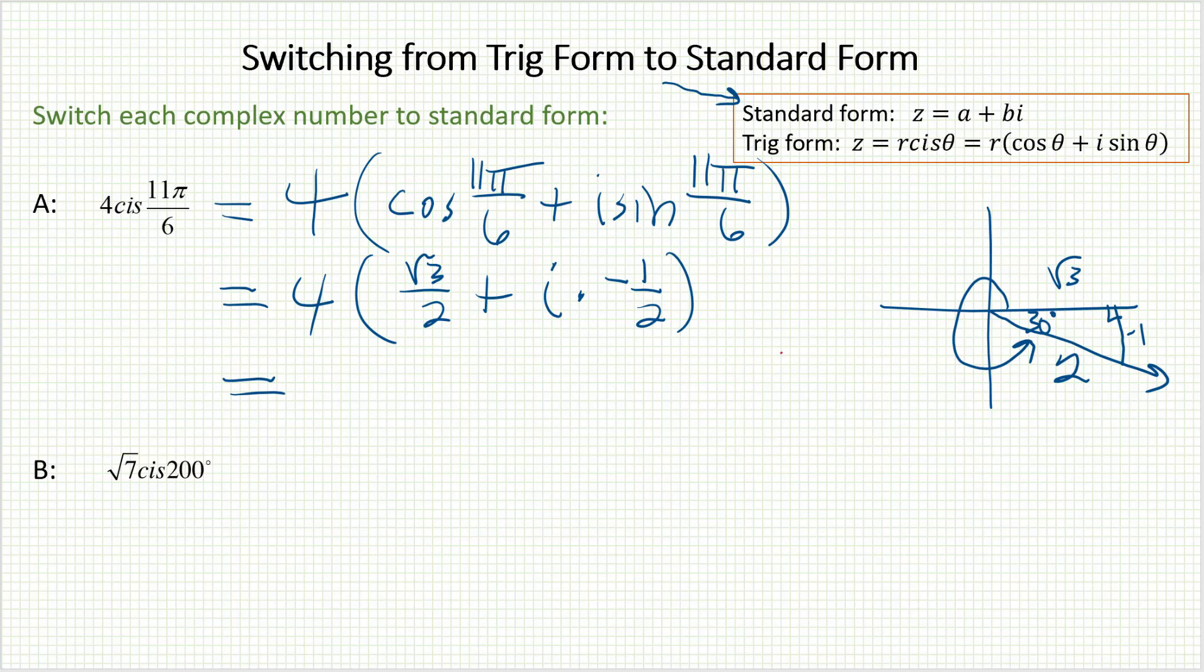I'll distribute the 4 in. When I multiply the first item, 2 will go into 4 twice, leaving me with 2√3. And in the second one, I am going to have a minus, positive times a negative. Half of 4 gives me 2, and of course I'll have the i in there. And I'm done.